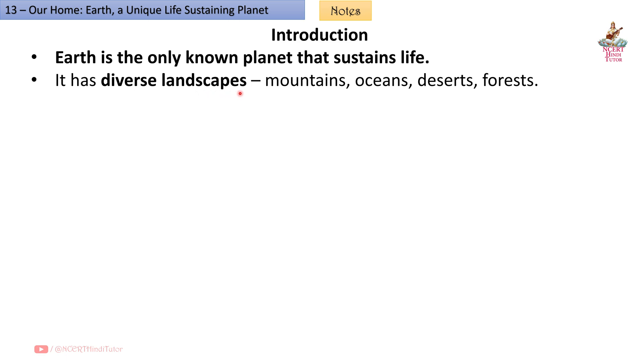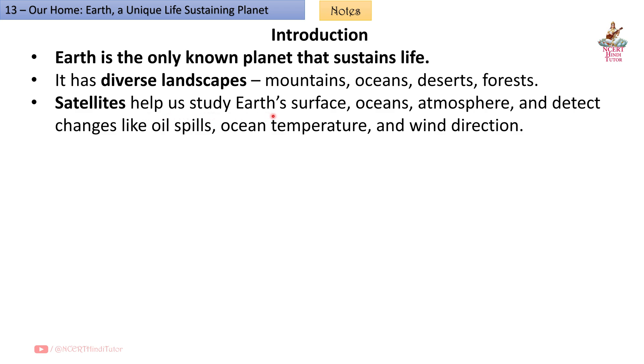It has diverse landscapes - mountains, oceans, deserts, forests. Satellites help us study Earth's surface, oceans, atmosphere and detect changes like oil spills, ocean temperature and wind direction. The chapter explores unique conditions that make Earth habitable.